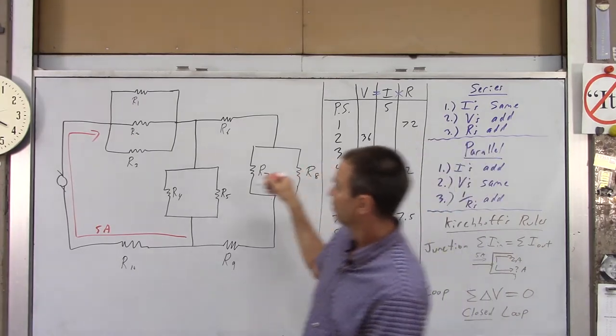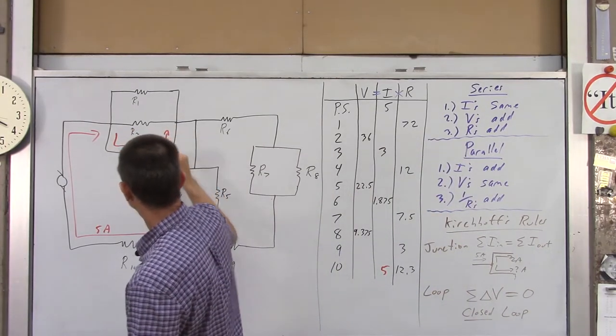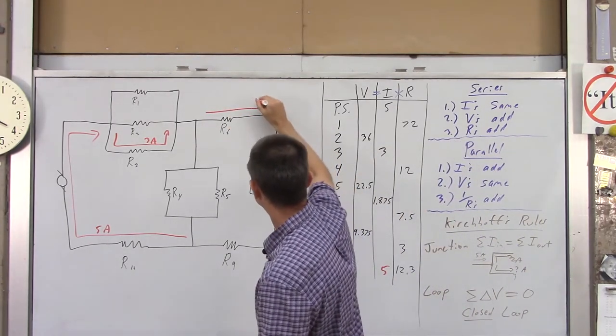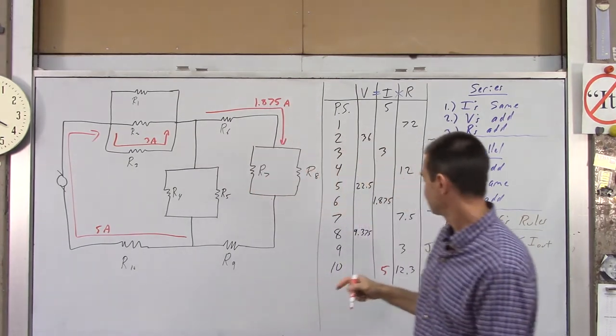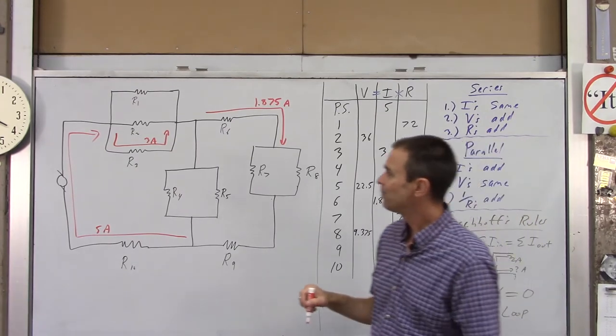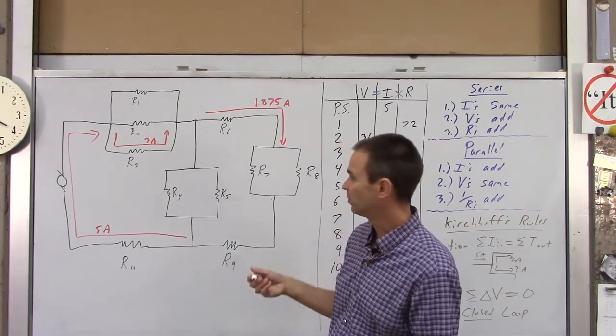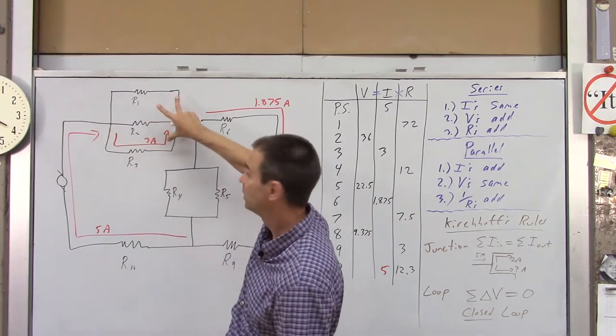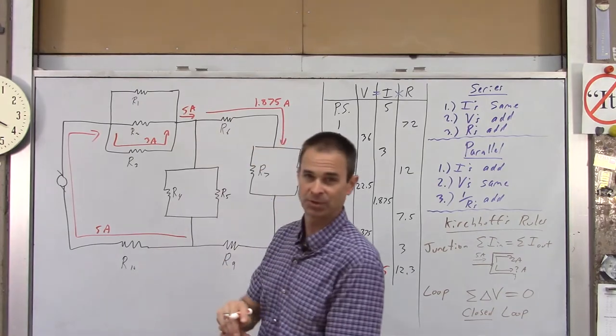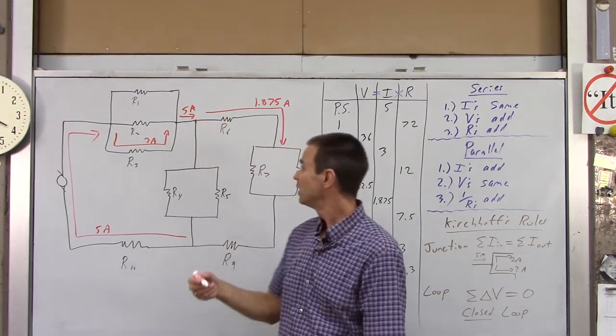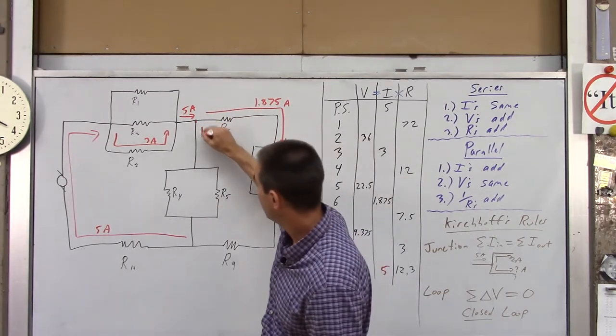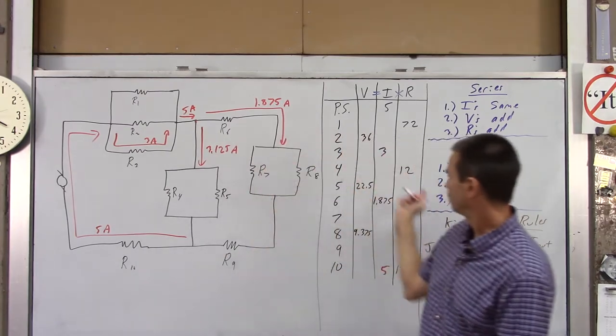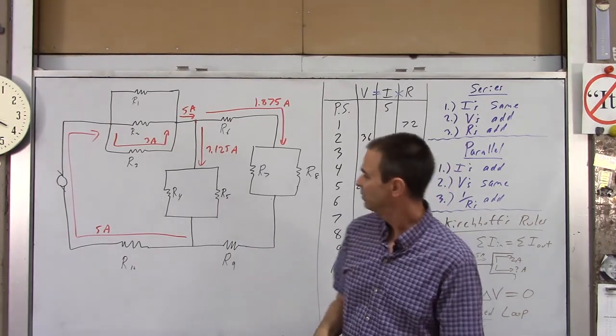We got a 3 amp current going through R3. Can't do much else with that right now. Through R6, we have a 1.875 amp current. Now there are a couple other currents that we can write in here. For instance, this current right here, just in that little bit of wire right there, 5 amps goes into here, it splits up, but then that 5 amps comes back together again. So this has to be 5 amps. And then look at this junction. Again, we're using Kirchhoff's junction rule. 5 amps goes into that junction. If 1.875 goes this way, how much has to go that way? If you subtract those two, you get 3.125 amps.